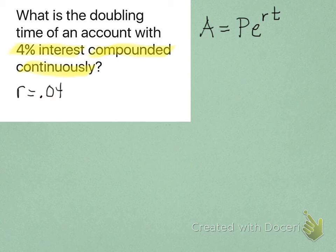Interest rate, 4%. Okay, we can figure out what R is. It's 0.04. But that's it. We don't really have any other numbers.